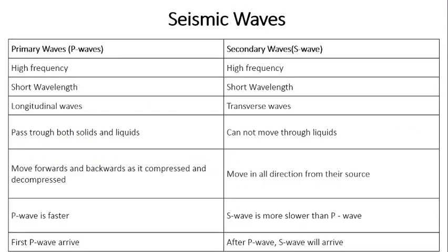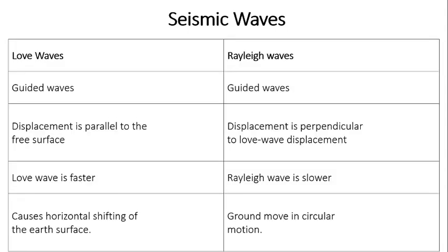Comparing the wave types: P-waves, which are very fast, cause very less damage. S-waves are slow and cause heavier damage. Love waves travel parallel in a snake-like motion. Rayleigh waves cause a rippling motion on the surface and result in very high damages.